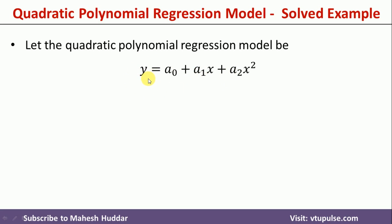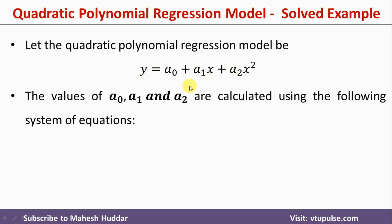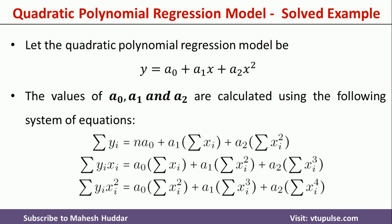Now the question comes: how to calculate the values of a0, a1, and a2? The values of a0, a1, and a2 are calculated using the following equations. You can see here there are three variables — a0, a1, a2 — and using these three equations, we can calculate the values of these particular variables.